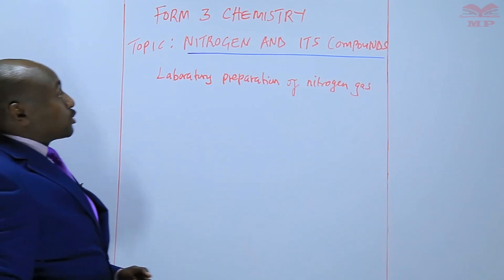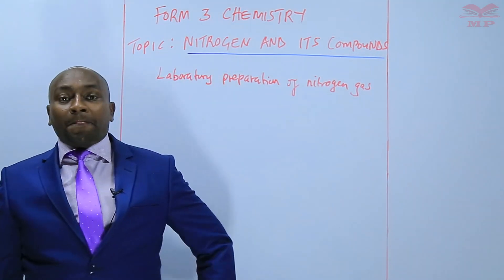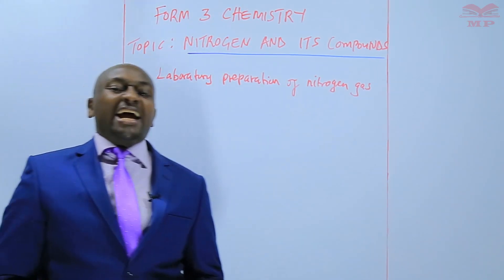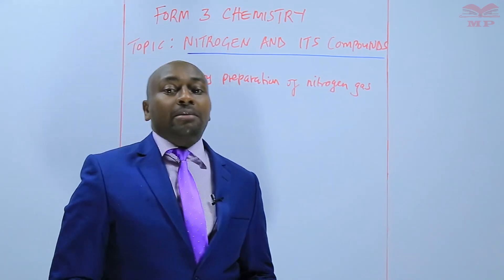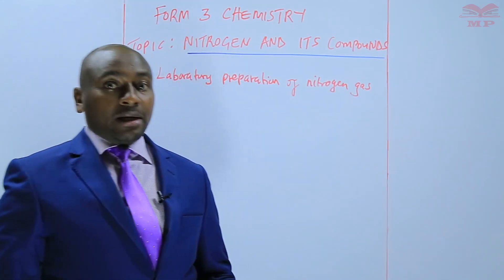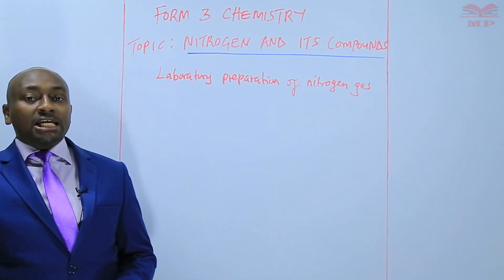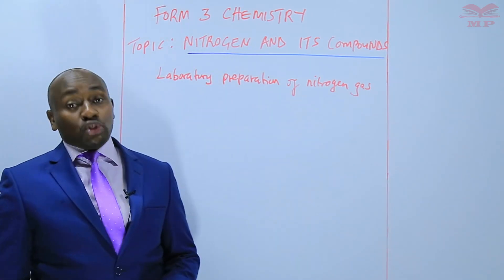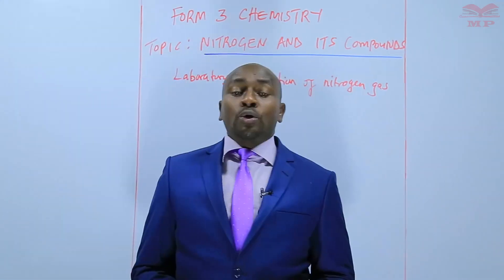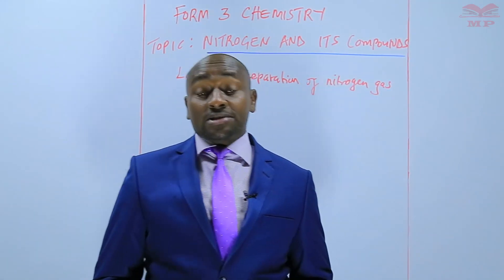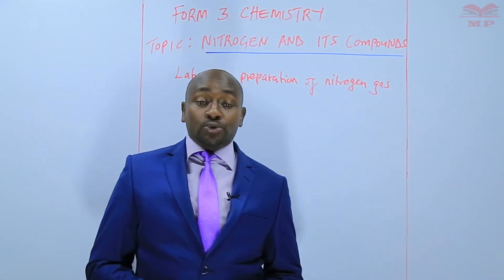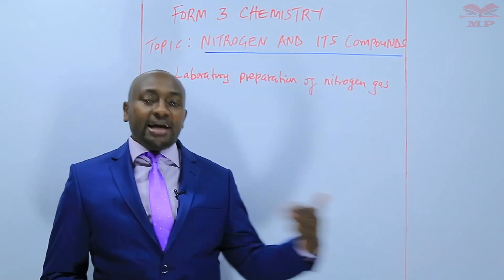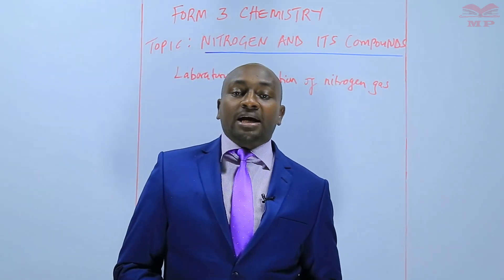In the laboratory preparation of the gas, nitrogen gas is prepared by heating ammonium nitrite. However, ammonium nitrite when heated is likely to result in an explosion. Therefore, we heat two salts which, when combined together, would produce ammonium nitrite — that is basically an indirect way of heating the ammonium nitrite.